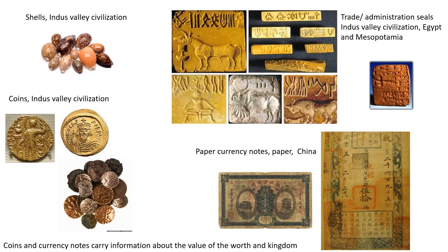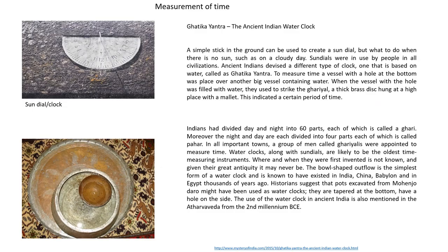Trade was largely dependent upon the barter system in ancient times until currency was invented. Indus Valley people invented currency coins, trade seals, and administration seals to track their goods for sale to distant places inland and overseas. Mesopotamians and Egyptians also used clay tablets as trade seals. Currency coins of copper, bronze, gold or silver were introduced much later; it was China which first introduced paper currency notes for trade, still in use today. Coins and currency notes carry information about the value of the currency as well as the kingdom. A simple apparatus was invented by early civilization people for measuring time during the day — it was the sundial, in popular use in almost every civilization. A simple stick in the ground and its shadow could tell time, but what to do on a rainy or cloudy day?